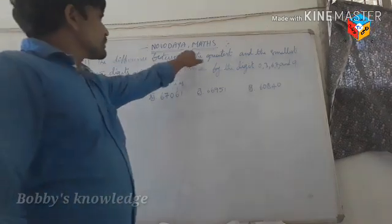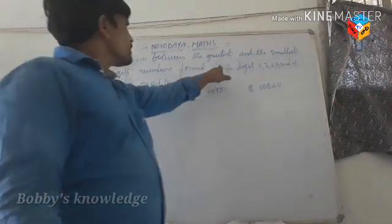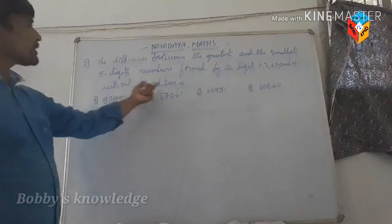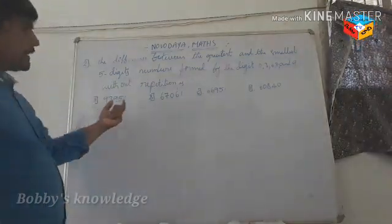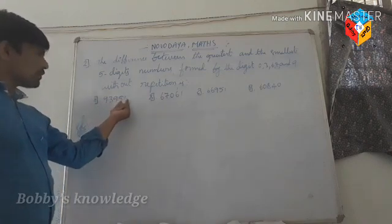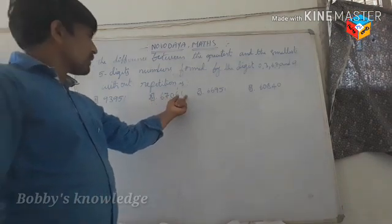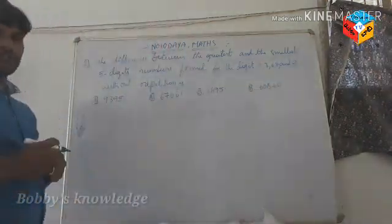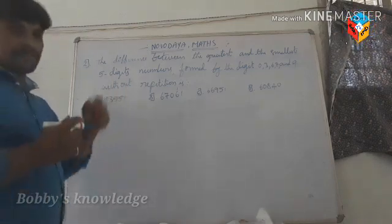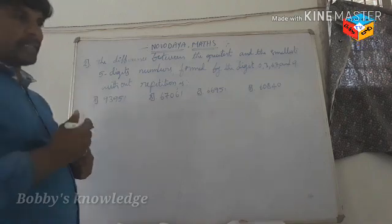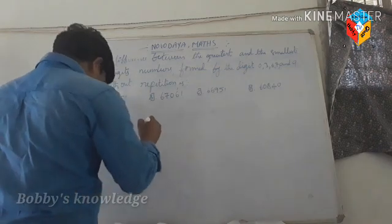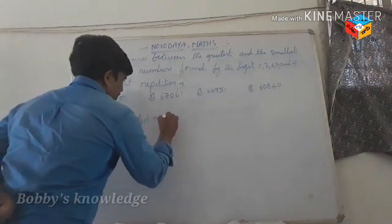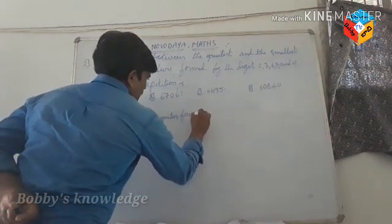Okay, understand. The answer is the fourth option. Now the next sum: what is the difference between the greatest and the smallest five-digit numbers formed by the digits 0, 3, 6, 7, and 9 without repetition? The options are: A) 93951, B) 67061, C) 66951, D) 60840. You will write out the digits and form the smallest and greatest numbers.